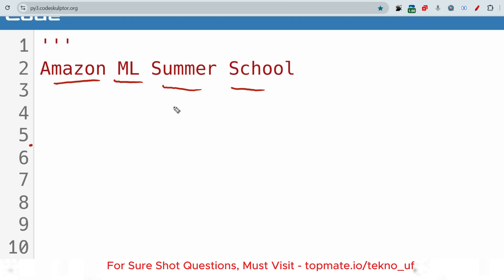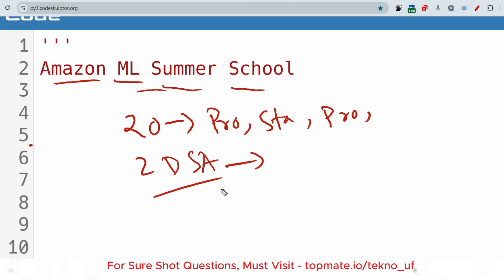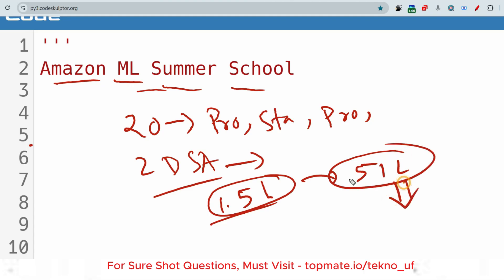The pattern will be like this: 20 MCQ questions from probability, from statistics, then programming basics, and from ML. Then two DSA-based or two coding questions will be there which you need to solve accurately, so that you can get an opportunity of 1.5 lakh per month internship offer or a 51 lakh per annum offer later in Amazon.